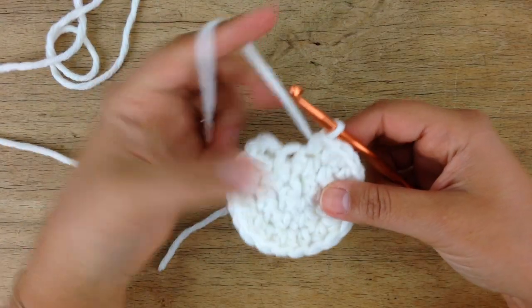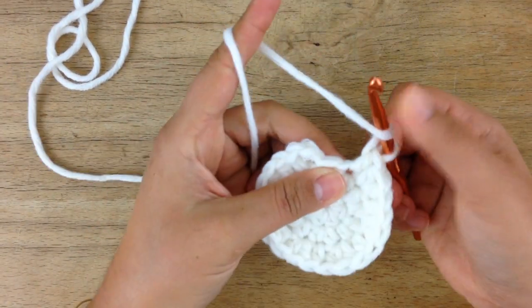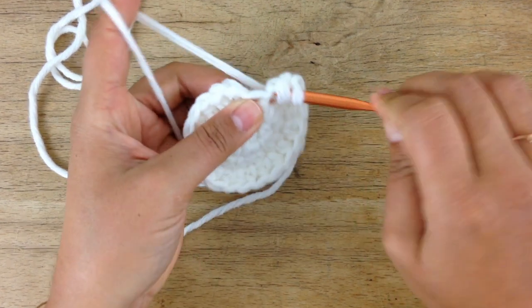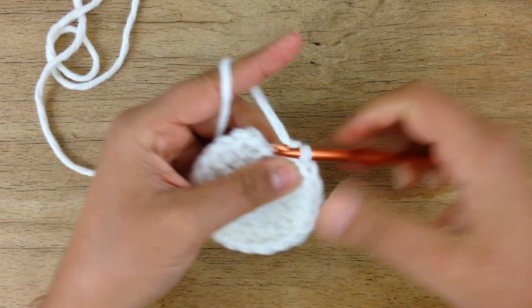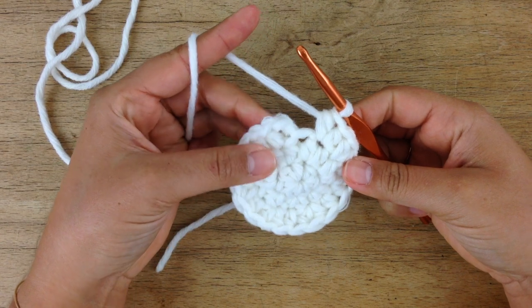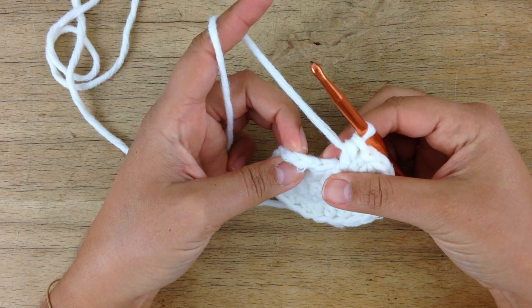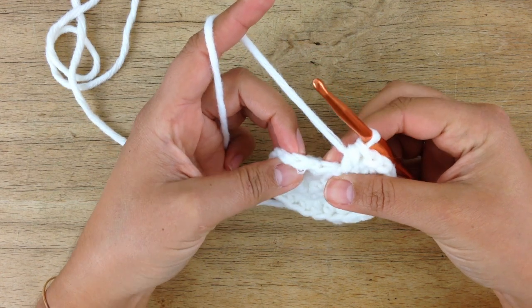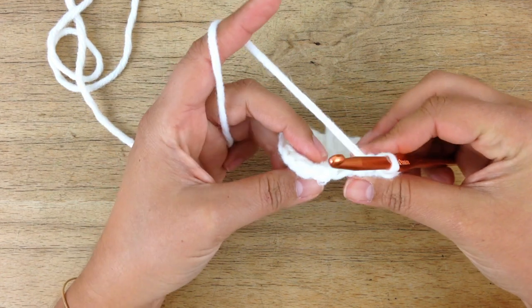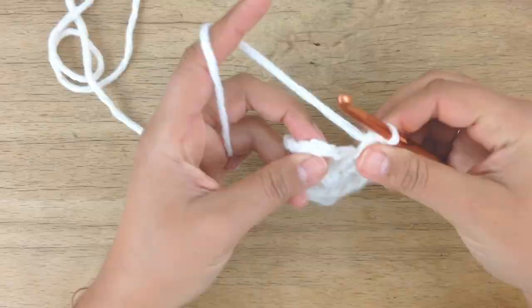Okay, so now I have crocheted the last half double crochet of my row, and I'm ready to do the slip stitch into the first stitch, which can be a bit tricky to see. So this is why I want you to look closely.